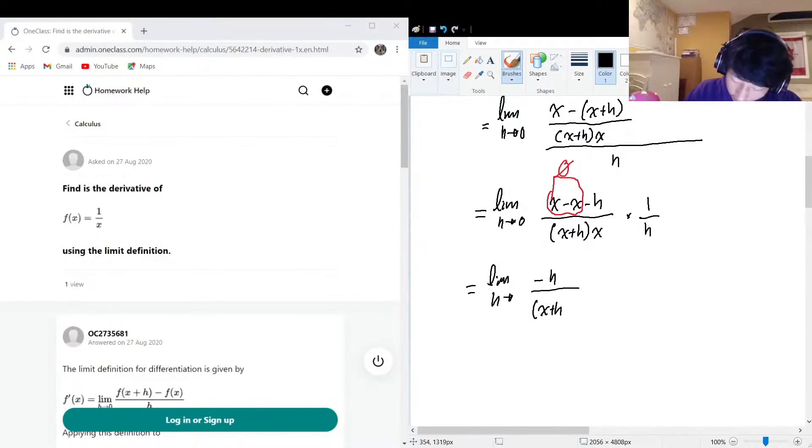x plus h multiplied by x, multiplied by h. And would you look at that, the h downstairs, h upstairs, they neutralize each other. So we just get the limit as h approaches zero